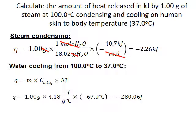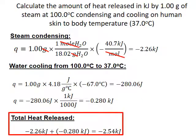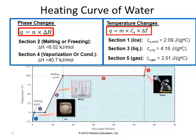Substituting these values into the heat capacity formula gives us negative 280.06 joules of heat released. All units cancel except for joules. Converting to kilojoules and adding the heats released in both parts of the process together, we get a total heat release of negative 2.54 kilojoules. Notice that the bulk of this heat release comes from the phase change condensation. This is why a steam burn can cause more damage than a hot water burn at the same temperature.